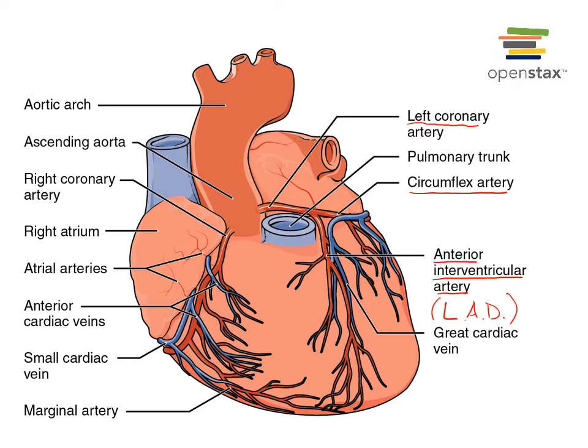The other major artery coming from the ascending aorta is the right coronary artery. It travels in the coronary sulcus and curves around on the right side toward the posterior of the heart, giving off several branches on the anterior of the right ventricle, including a major branch known as the right marginal artery, or the marginal branch of the right coronary artery, found along the margin of the diaphragm and the right ventricle.